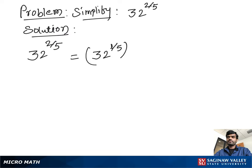The fifth root of 32 is 2, because if we multiply 2 by itself 5 times it gives us 32. And 2 squared is 4, so our final answer is 4.